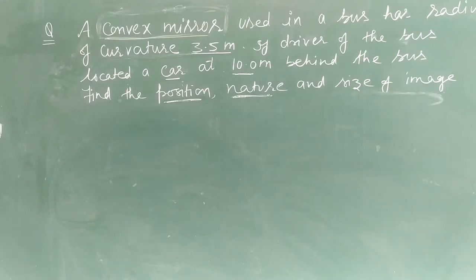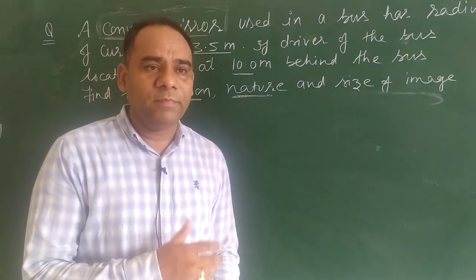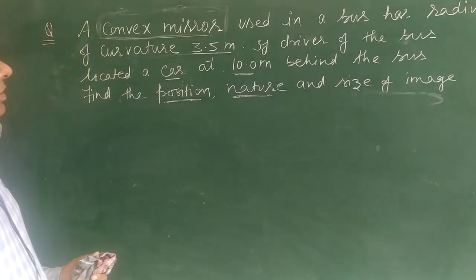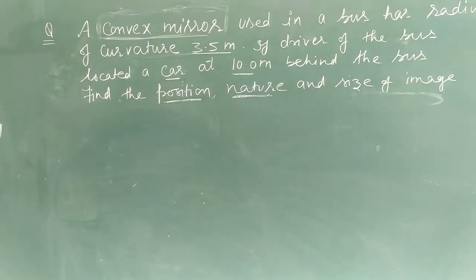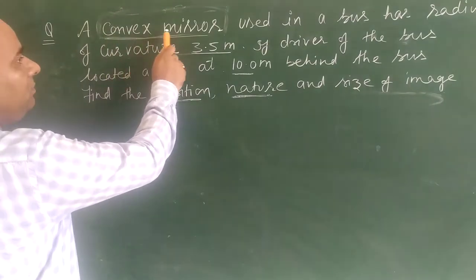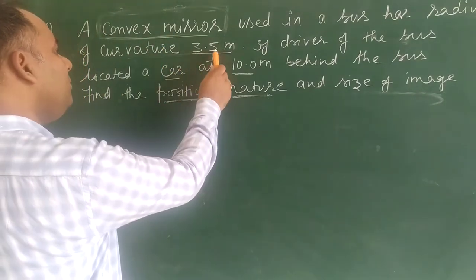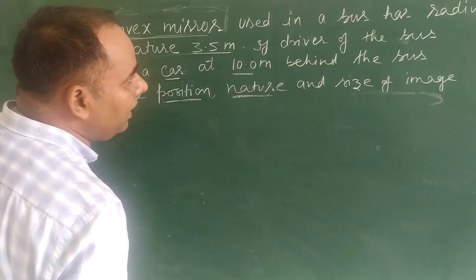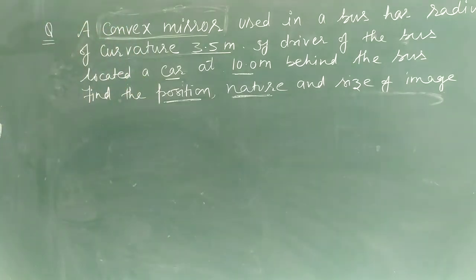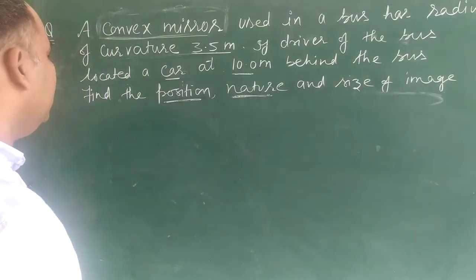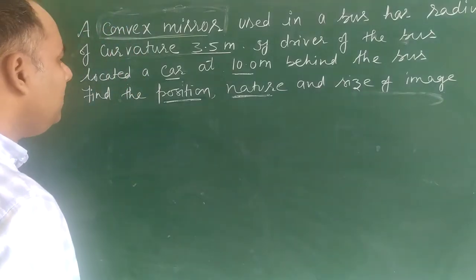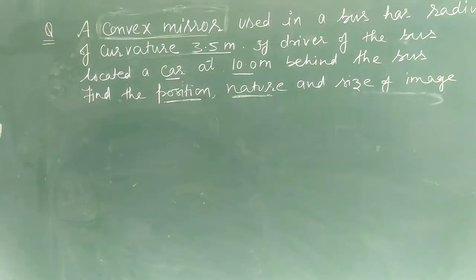Hello students. Myself Deepak Managot here, and on the board there is a numerical problem. A convex mirror used in a bus has a radius of curvature of 3.5 meters. If the driver of the bus located a car at 10 meters behind the bus, find the position, nature, and size of the image.